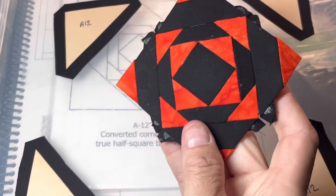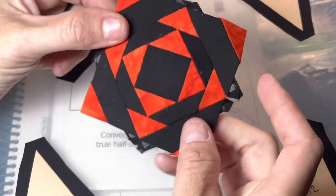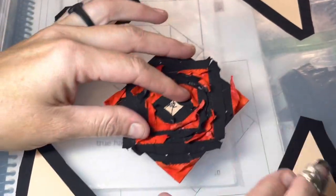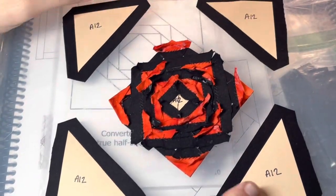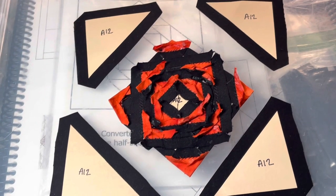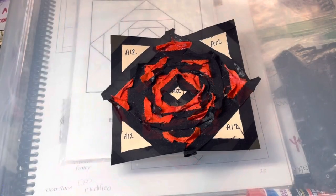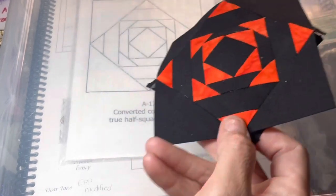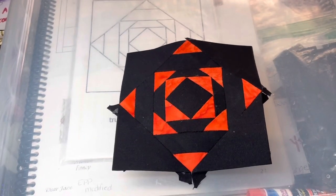So I've attached the edge triangles. So now I've got a square diamond, however you look at it. And my last thing to do is to attach these large triangles on the outside. So I've attached the outside triangles and now my A12 block has been completed.